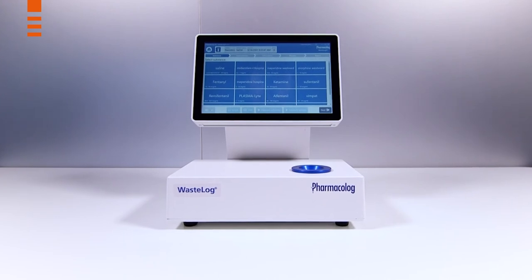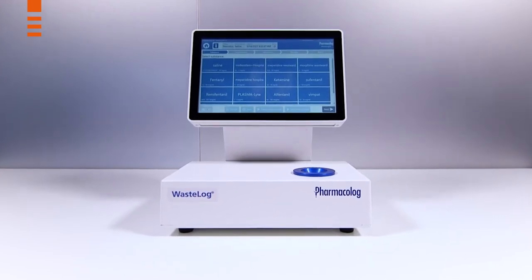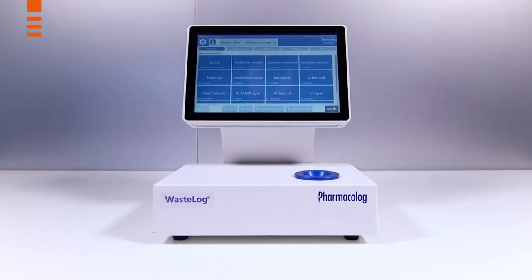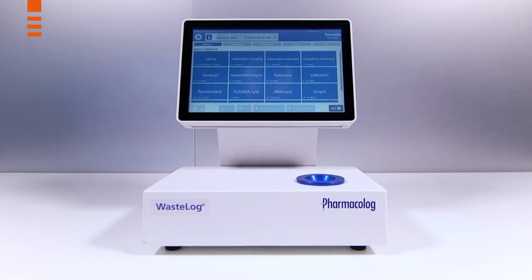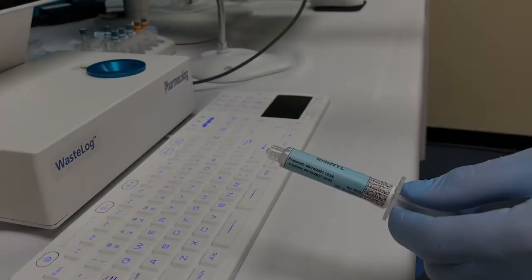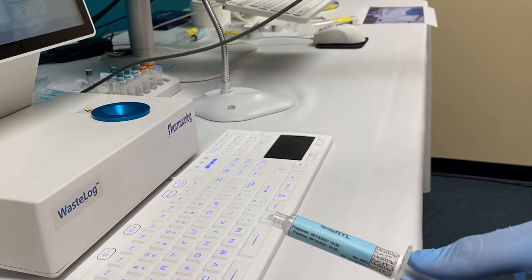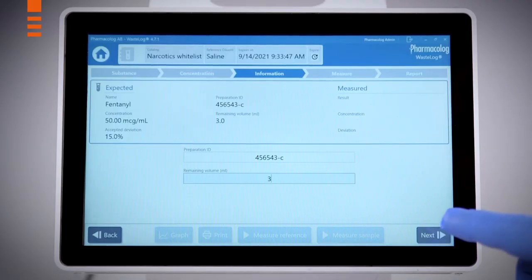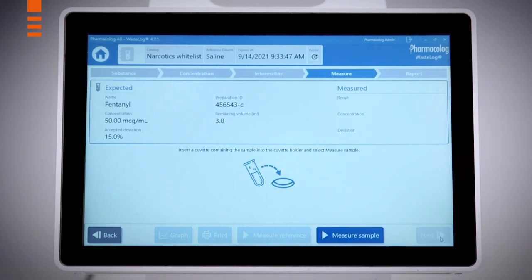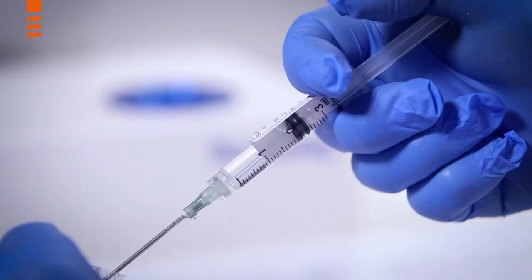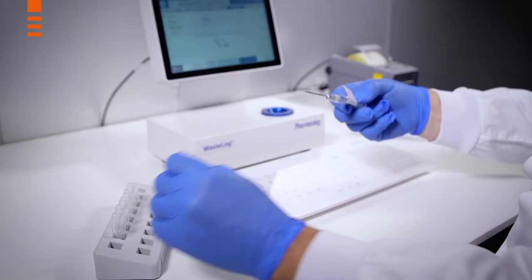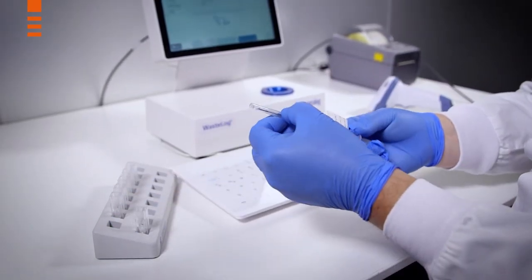WasteLog provides a simple and effective way to monitor and safeguard discarded or returned controlled substances. The expected substance and concentration are easy to scan. A small sample of the controlled substance is withdrawn and inserted into the WasteLog device.